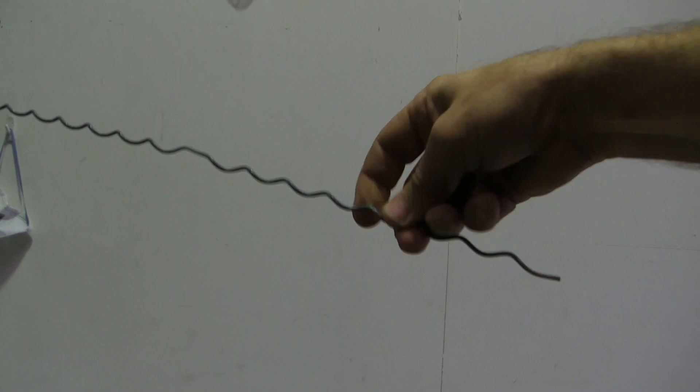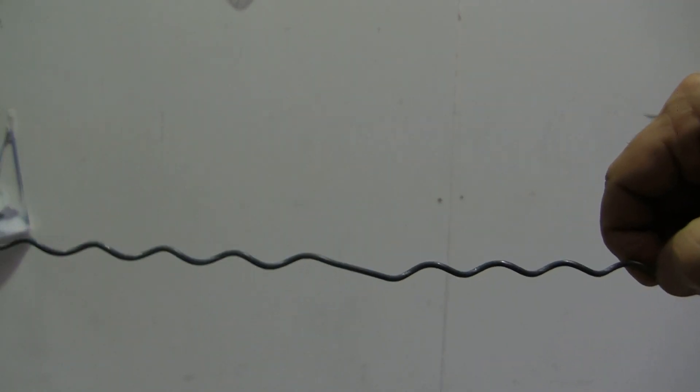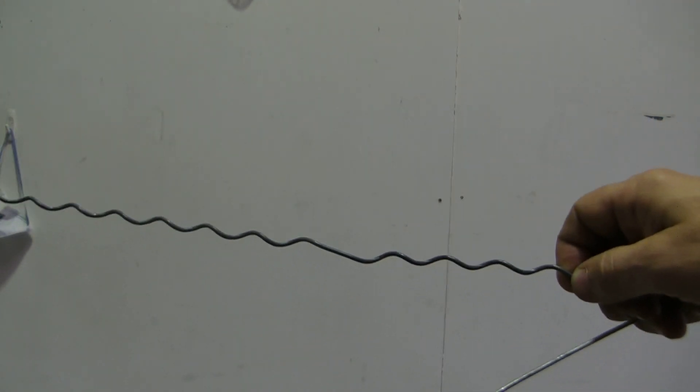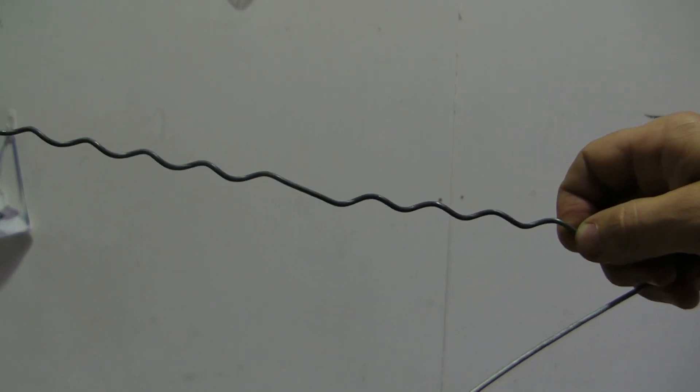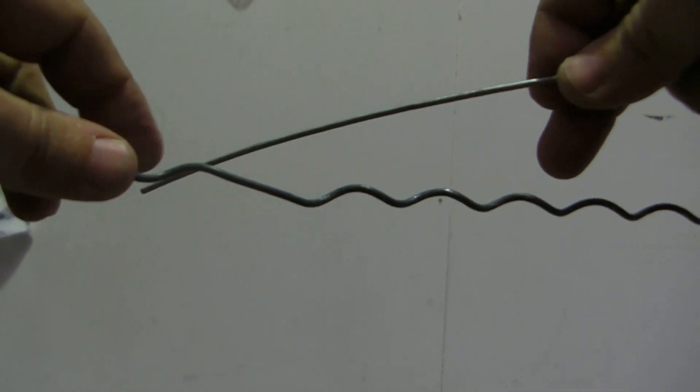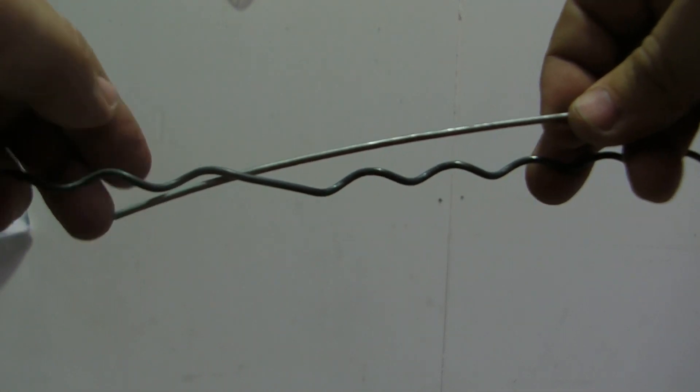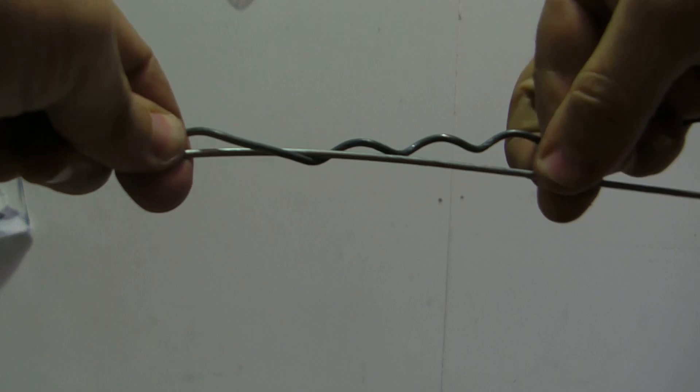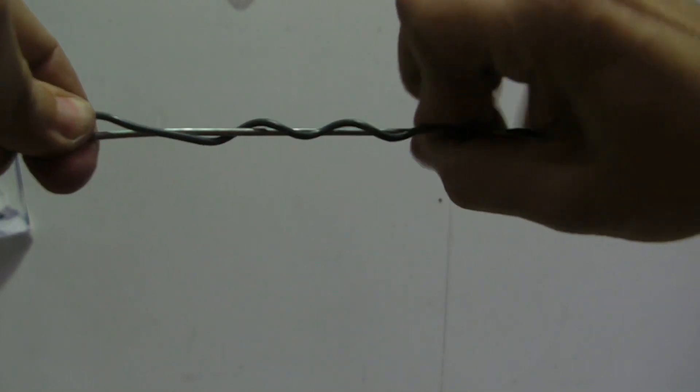If you notice in the center of the joiner, there's a flat section here. One of the most important parts is that you need to place the first wire just past the flat section in the middle, and then you wrap by hand.